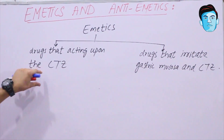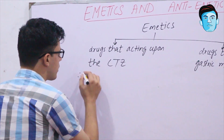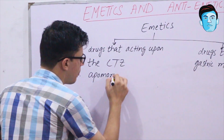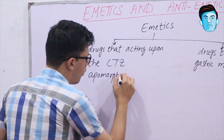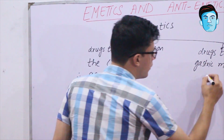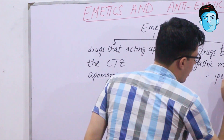In the first class — drugs acting on the chemoreceptor trigger zone — we have apomorphine. In the second class — drugs that irritate the gastric mucosa and chemoreceptor trigger zone — we have ipecac.